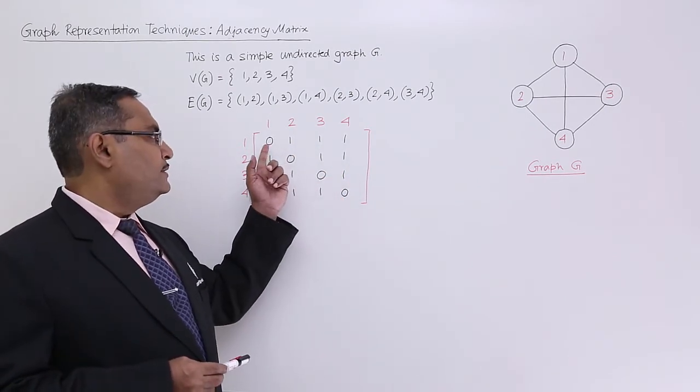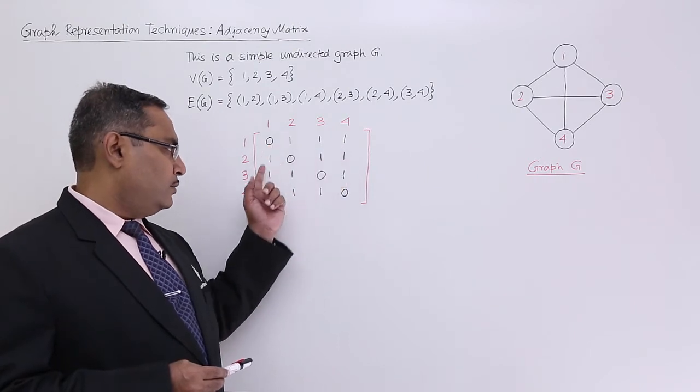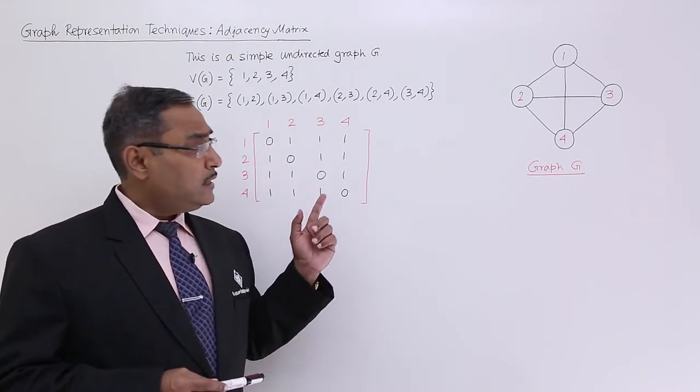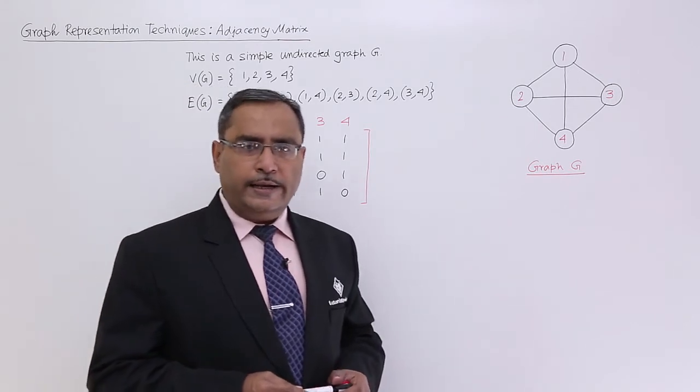You can easily find 0, 1, 1, 1; here also I am finding 0, 1, 1, 1. So it is true in case of undirected graph,